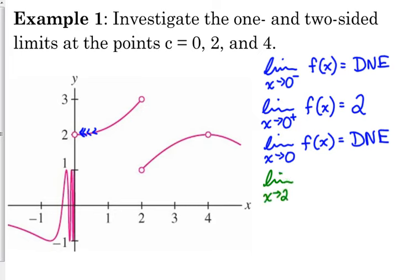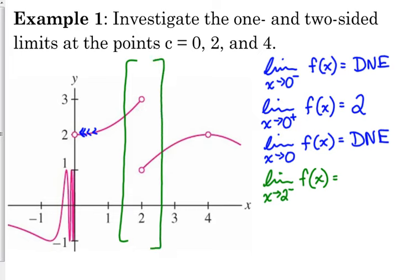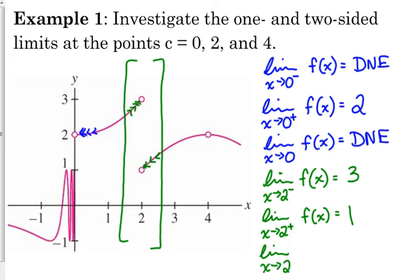Let's look at the left-handed limit for two. I'm focusing on x equals two and approaching from the left, following my graph. Where are my y values headed? Three. From the right, my y values are headed towards one. So those one-sided limits exist, but my two-sided limit as I approach two does not exist.